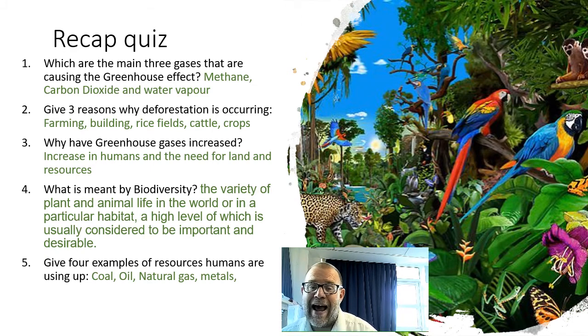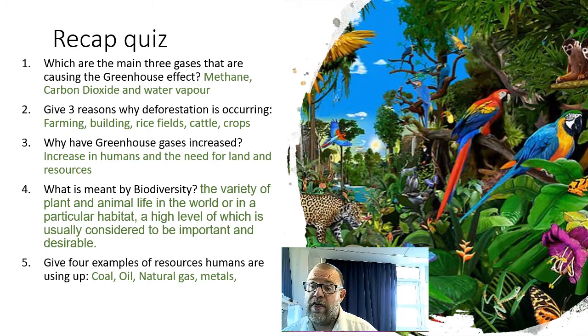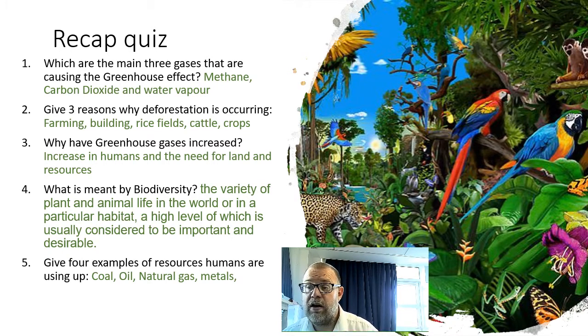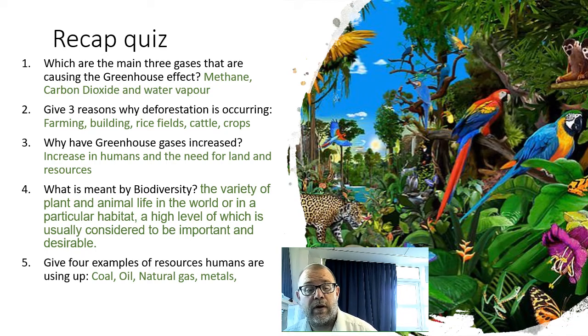The Great Barrier Reef has a high biodiversity, whereas places like the arctic or the desert have a low biodiversity — there's not a lot of animals and plants that live there.